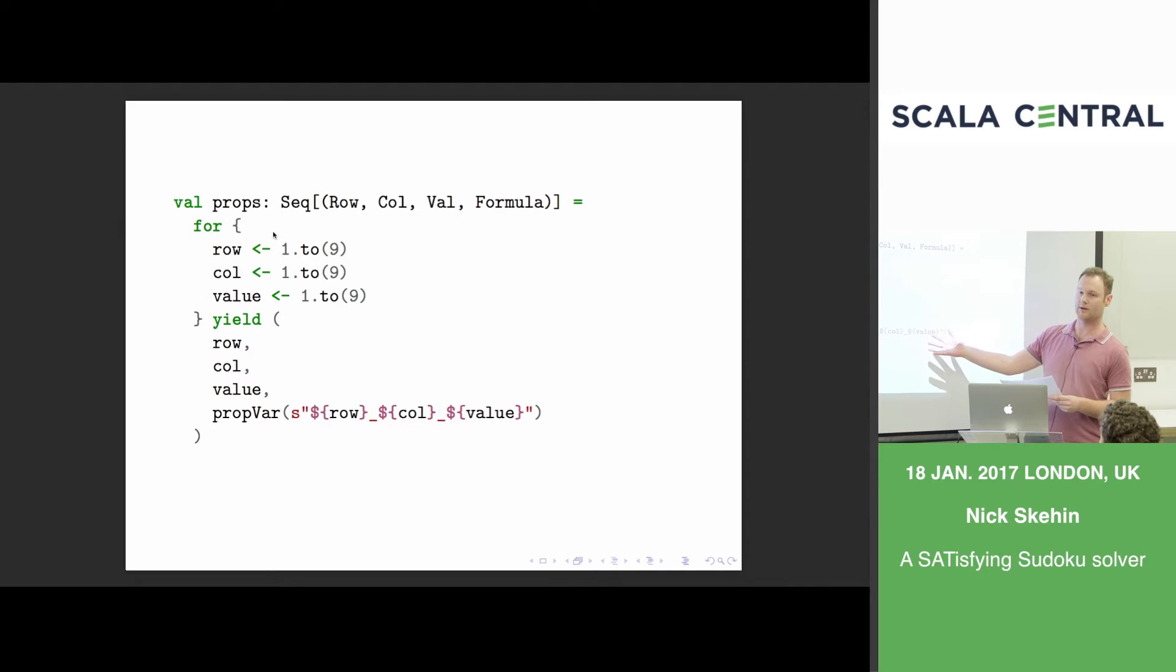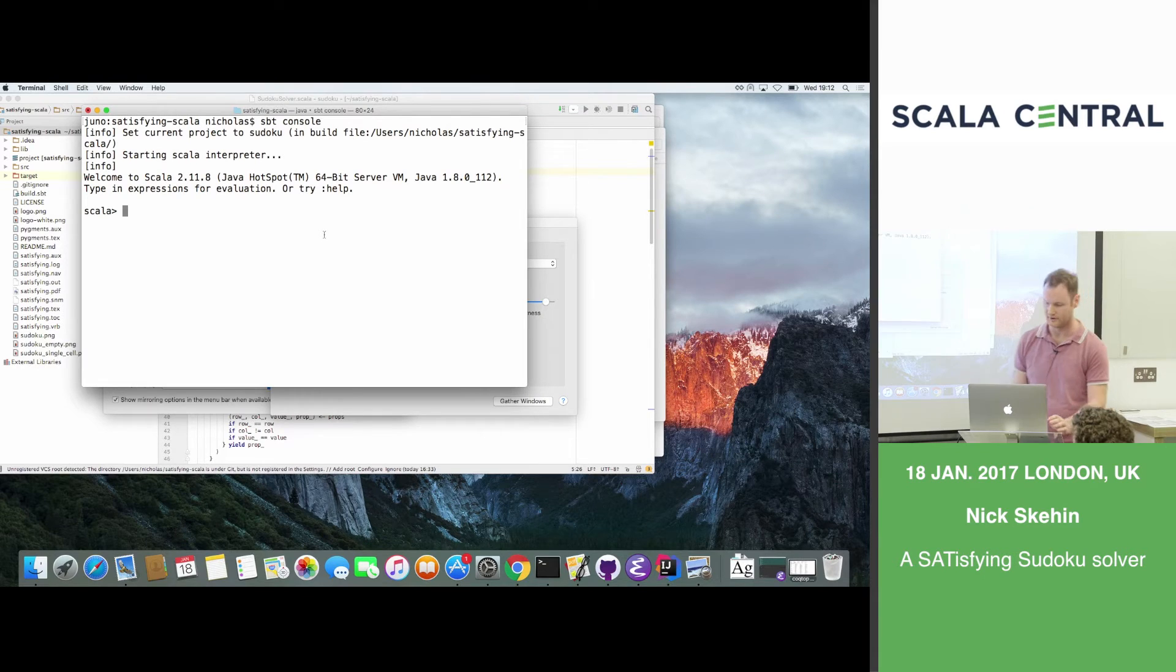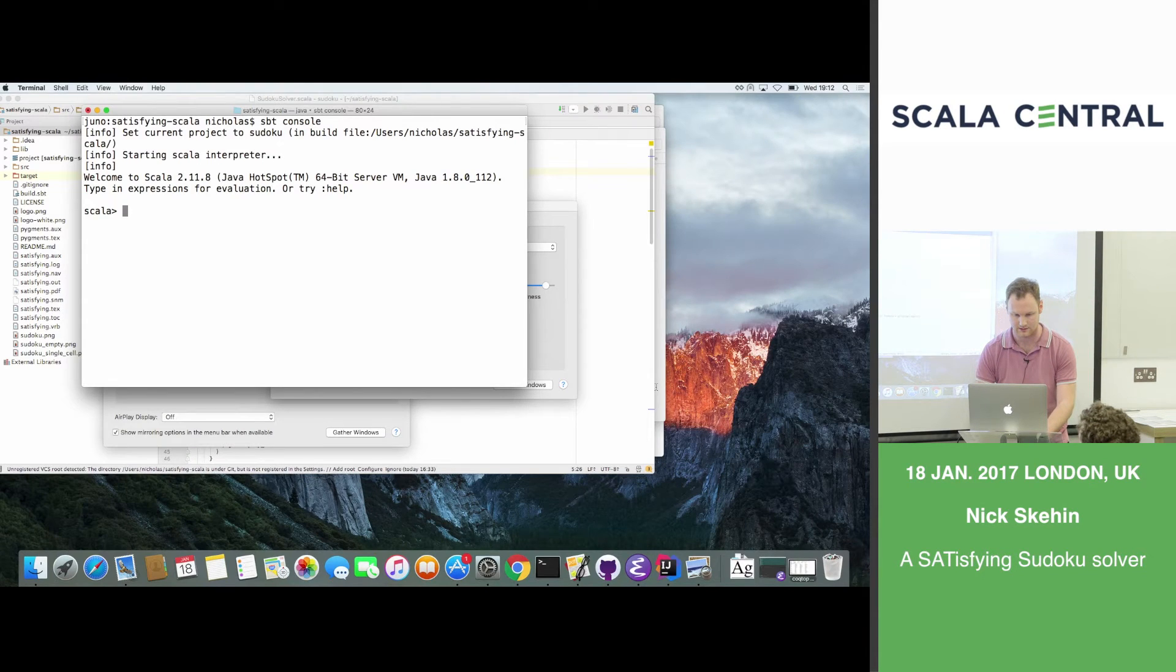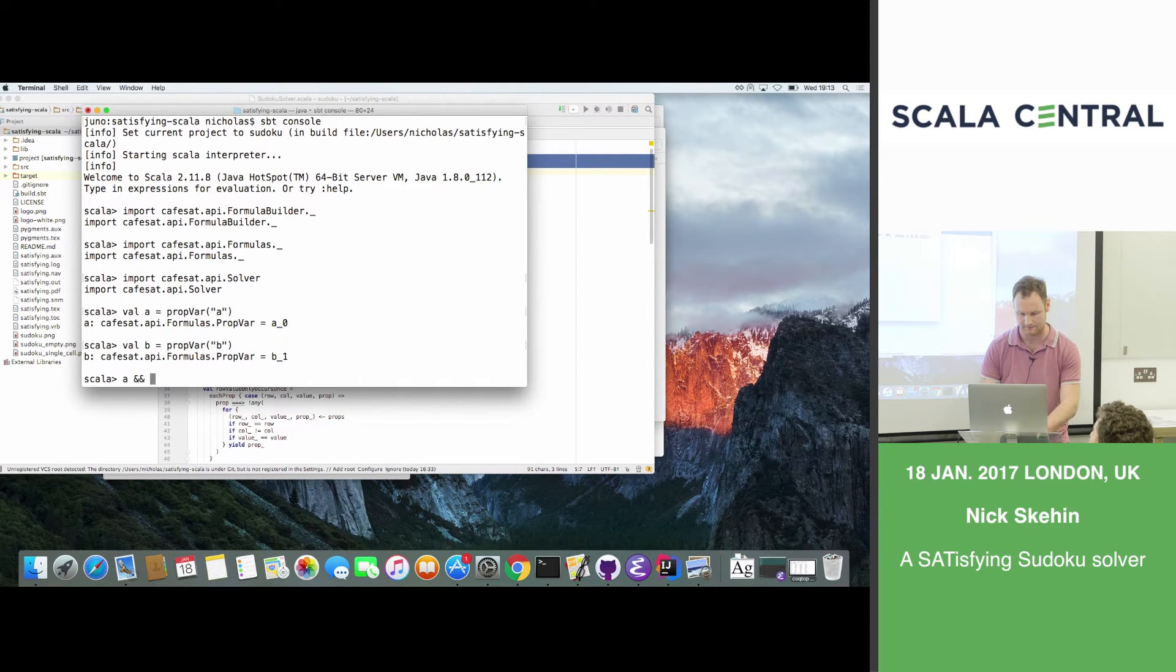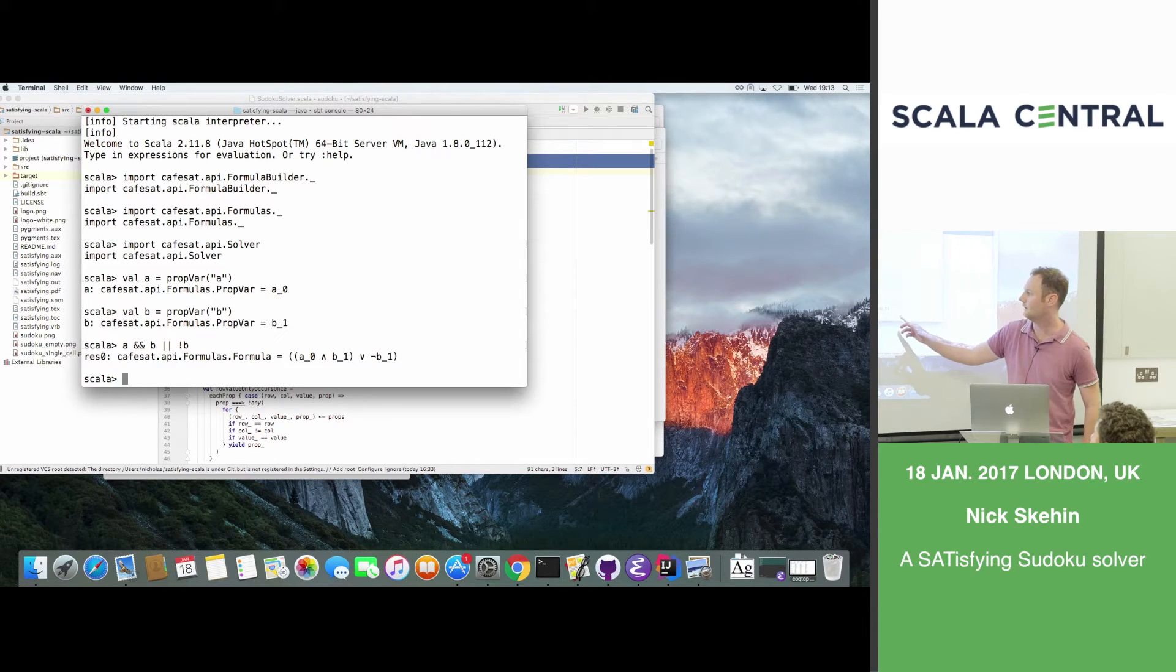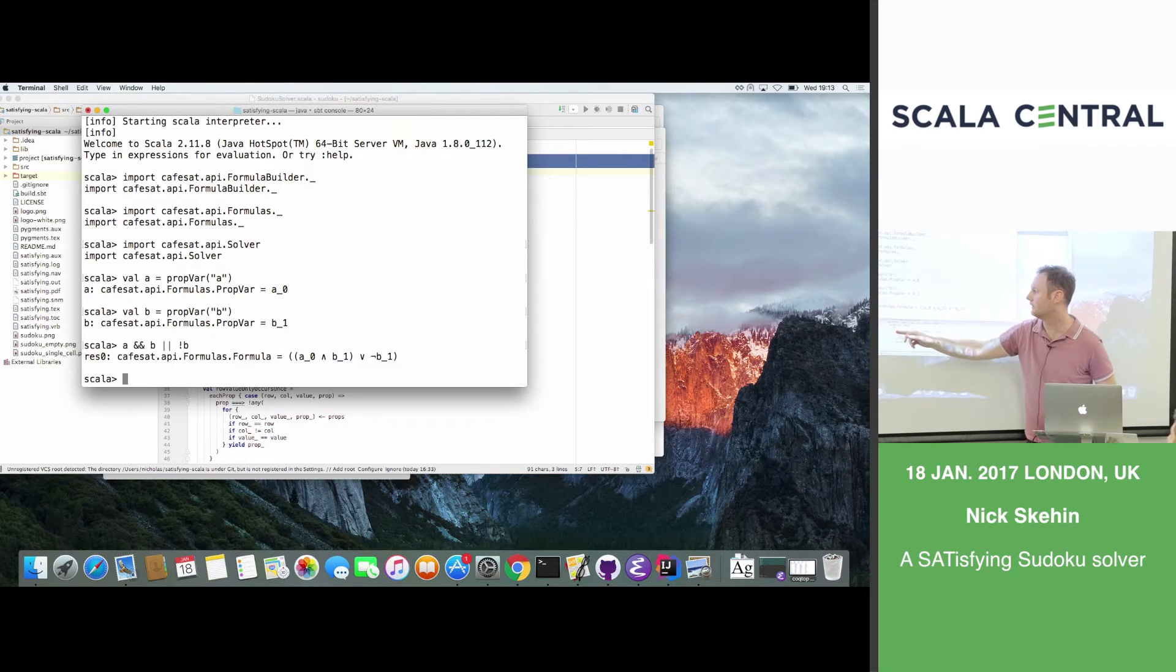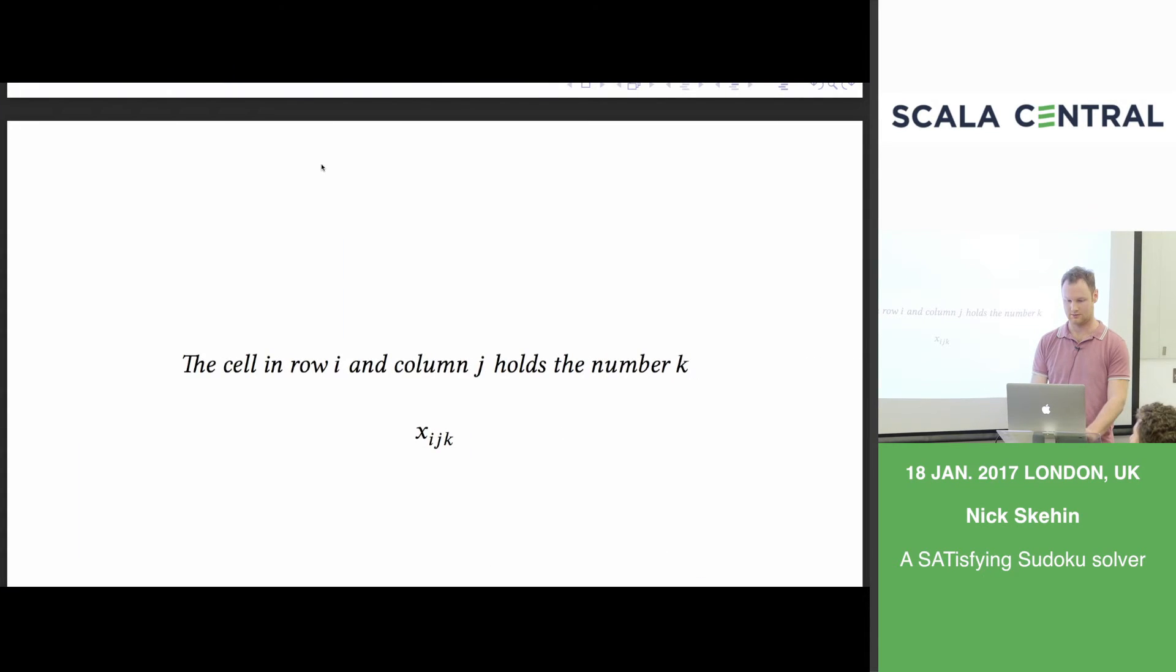So this is what it might look like. I can show you with the library that I'm using how this works. So I'm using a library here called CafeSat and what we can do here is we can just define a few variables like this and then we can write a formula. All we do is we just build up a formula in memory basically.